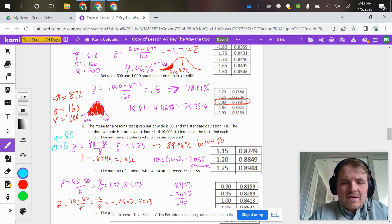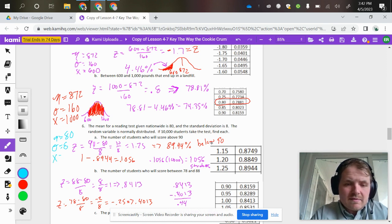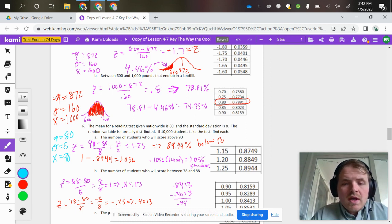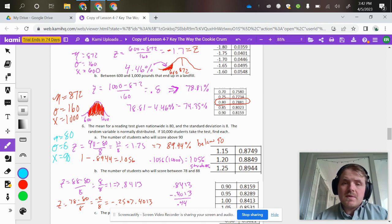Now my specific situation asks for the number of students that will score above 90. So my X value is above 90, not 90%. If 10,000 students take the test, we're going to have to find the percentage in general, and then take that percentage out of 10,000.